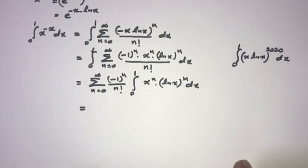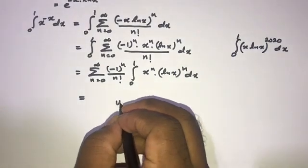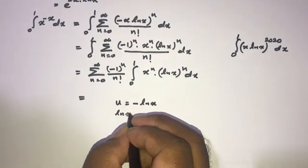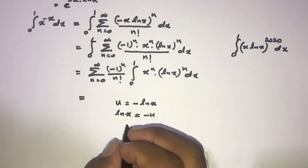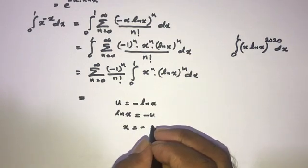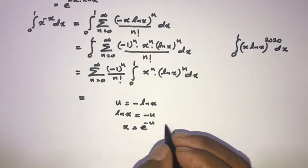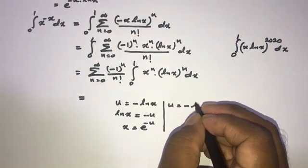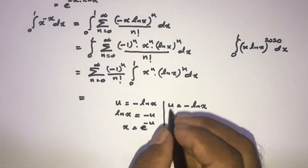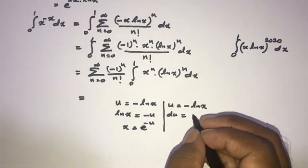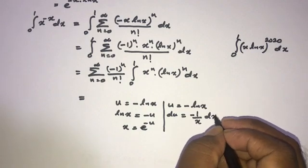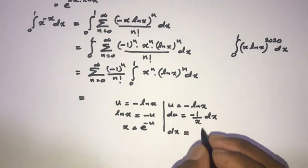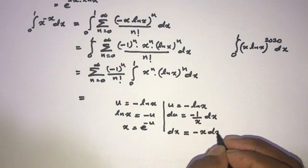Now, how do we solve the integral from 0 to 1 of x^n times (ln x)^n dx? We use substitution. Let u equal minus natural log of x. Then natural log of x equals minus u, and x equals e^(-u). Differentiating, du equals minus 1 over x dx, so we can isolate dx.